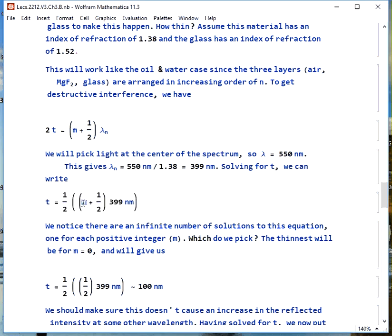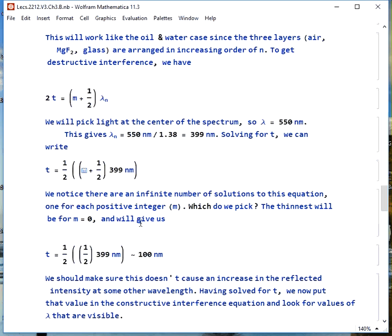Now light is a range of frequencies and wavelengths so let's pick the center of the spectrum which is about 550 nanometers. In that magnesium fluoride 550 nanometer wavelength becomes 399 nanometer wavelength. We solve this equation for t and we're going to get very close to 100 nanometers. There's actually an infinite number of solutions here. M can be 0, 1, 2, 3, any positive integer but the simplest one is if m equals 0.